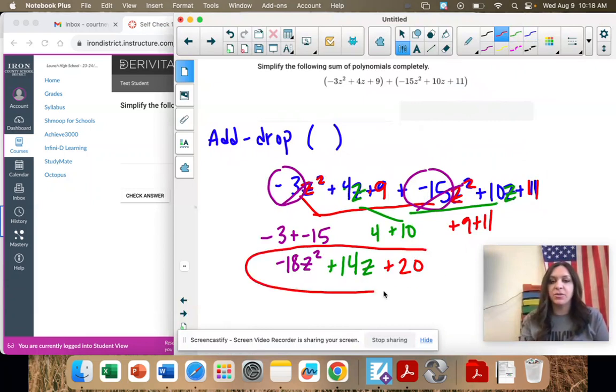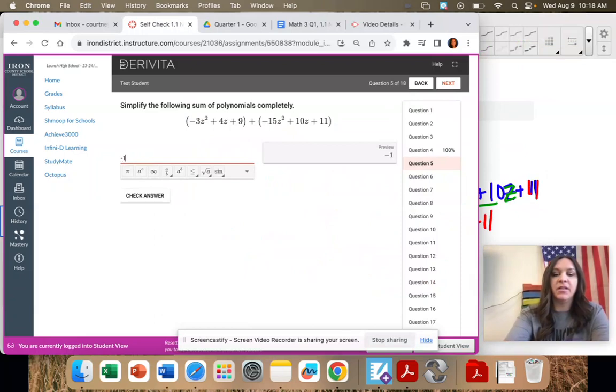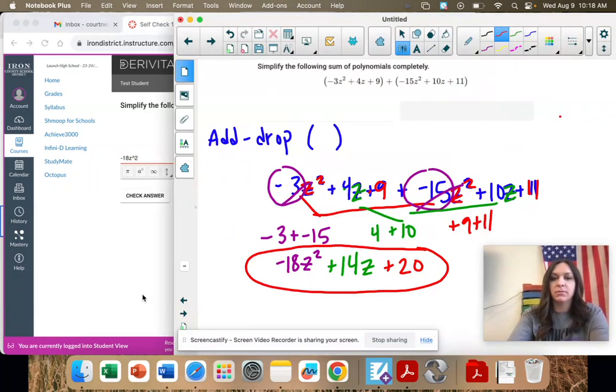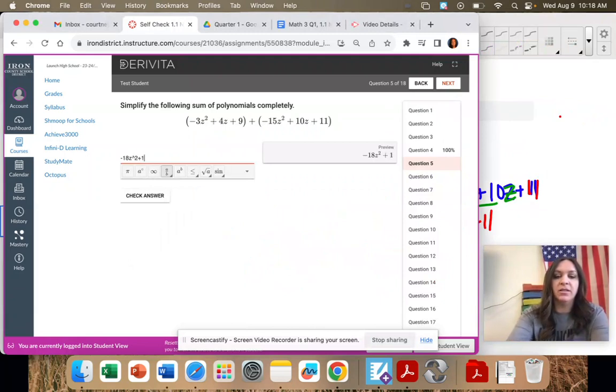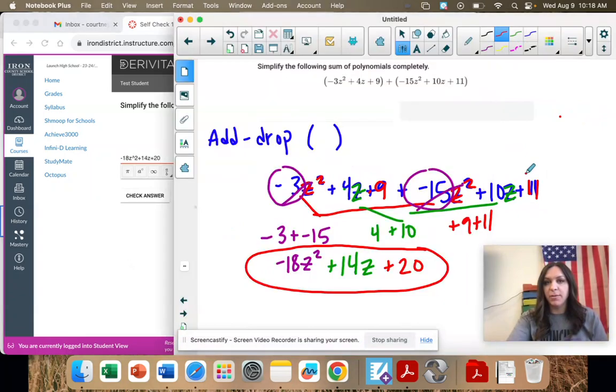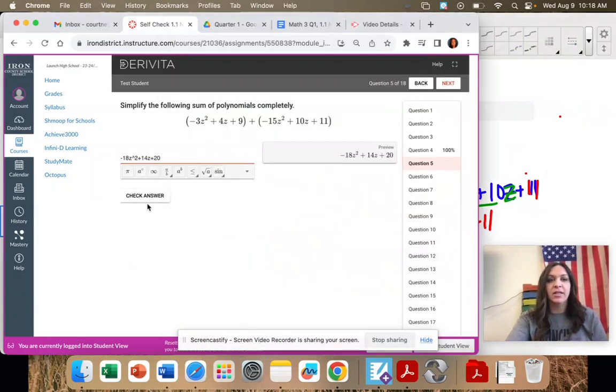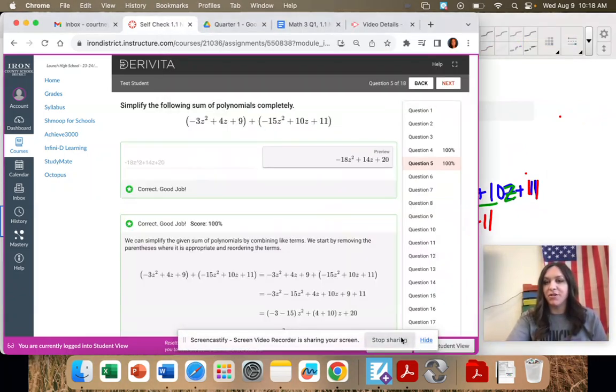And that's as far as we can go. Those don't combine anymore. So we're going to type it in just like that. Negative 18z squared plus 14z plus 20. And you want to make sure what you've written in the preview matches your answer. And it'll tell you if you're right or wrong.